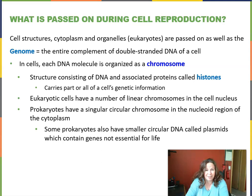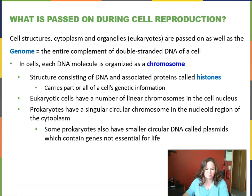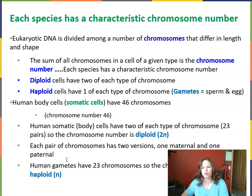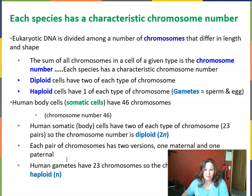Each species has a characteristic chromosome number. Eukaryotic DNA is divided among chromosomes that differ in length and shape. Humans have 46. Fruit flies have 8, chimpanzees I think it's 48. The sum of all chromosomes in a cell is its chromosome number — for us, that would be 46. Our regular body cells are called somatic cells and are described as being diploid — the prefix 'di' means two, so we have two of each type of chromosome.